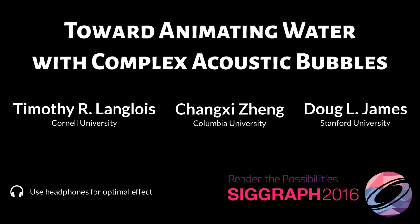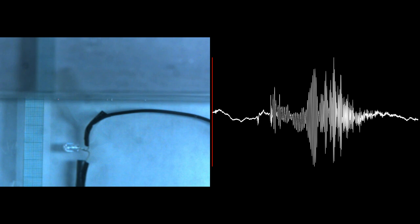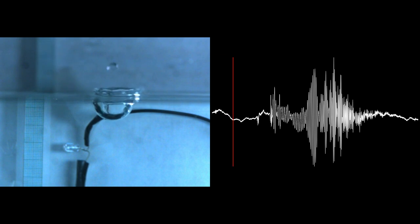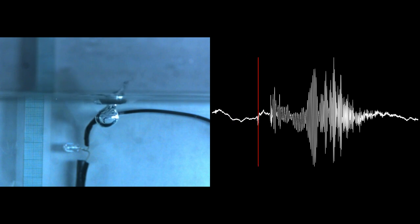Fluid sounds come mainly from bubbles. When a bubble is formed, it's forced into volume oscillations, giving off pressure waves that we hear as sound, like this. In slow motion, we can see the sound is radiated as the bubble forms.